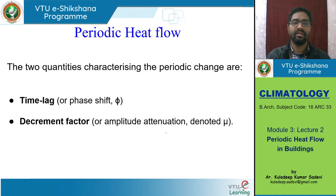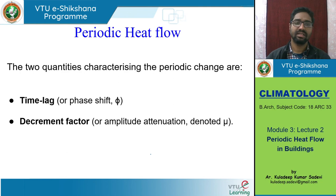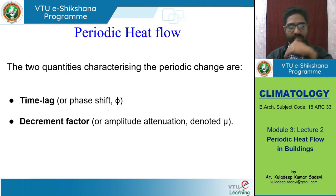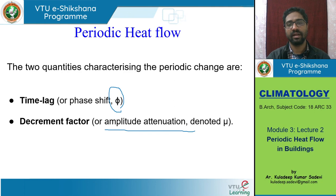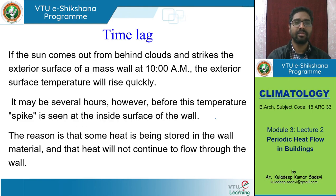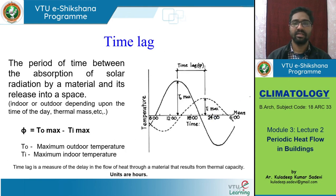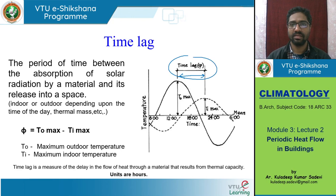There are two quantities that define this periodic heat flow — typical characteristics: one is time lag and another is decrement factor. Time lag is the phase shift that happens from outdoor to indoor, defined by the symbol φ. Decrement factor is the amplitude attenuation. Time lag is simply the time it takes from the outdoor maximum at 2:30 PM to the indoor maximum at 10 PM — that gap is what we call time lag.